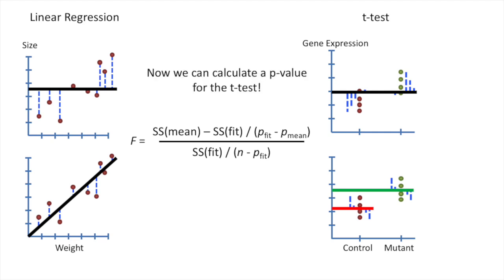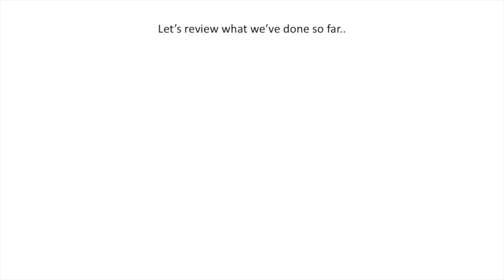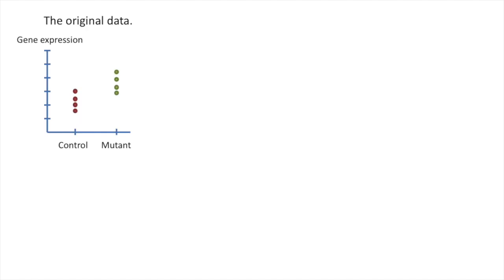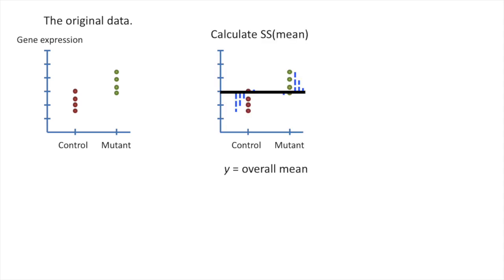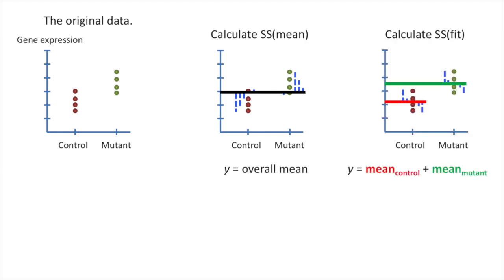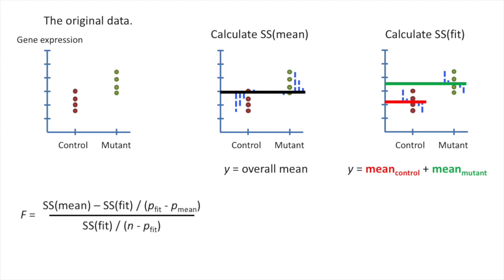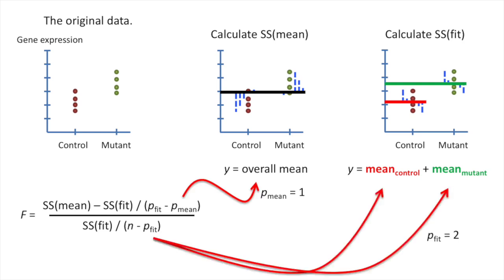Now we can calculate a p-value for the t-test. Let's review what we've done so far. Here's the original data: gene expression for control mice and mutant mice. First we calculated the sum of squares of the residuals around the overall mean. Then we calculated the sum of squares of the residuals around the fit — in order to do this with a single equation, we had to create a design matrix. Once we've calculated the sums of squares, all we have to do is plug the values into the equation for F, and then we'll get our p-value.